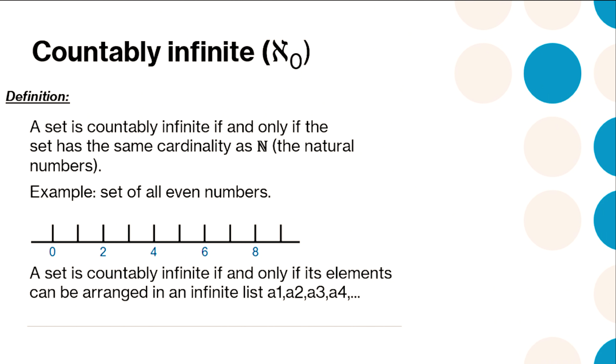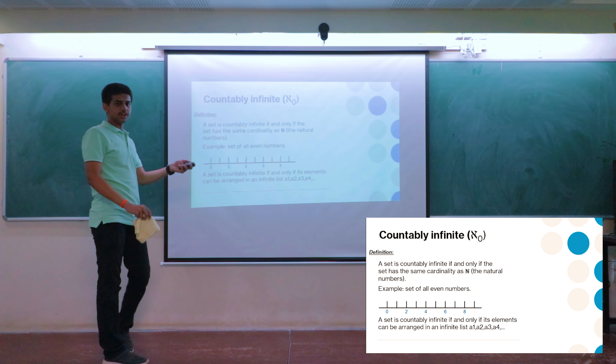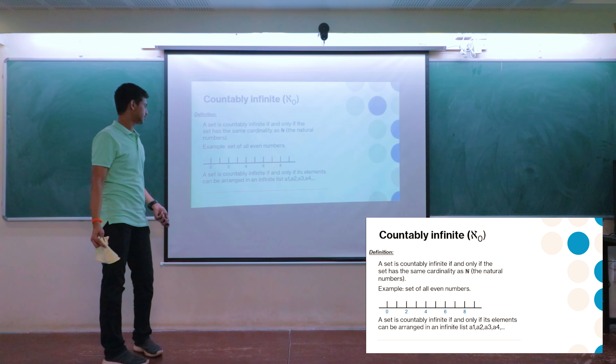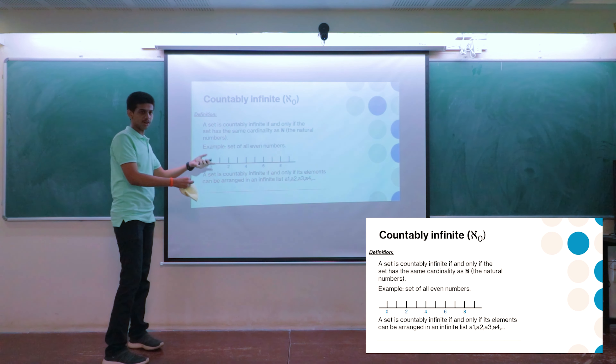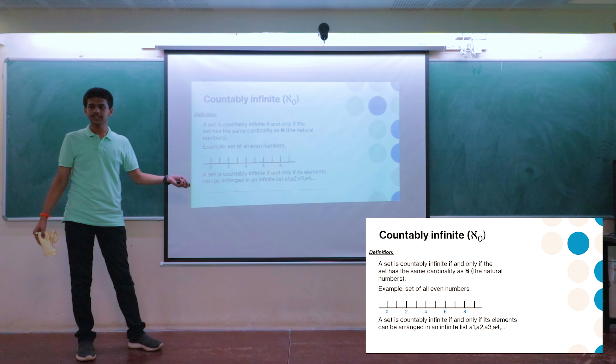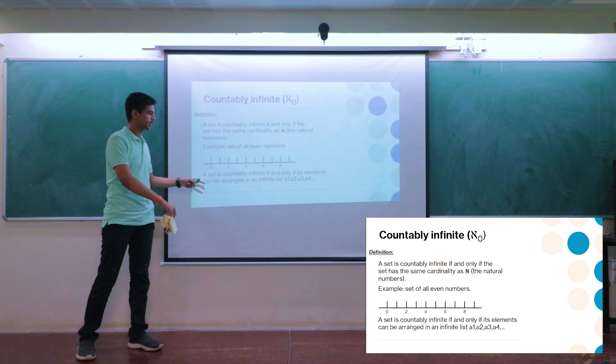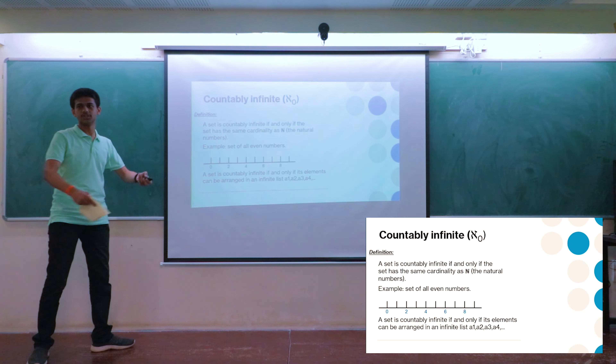In mathematics, it's common to name something when it appears frequently. When a set has the same cardinality as the natural numbers — like integers and whole numbers — we call them countably infinite sets. An example is the set of all even numbers. One condition for a countably infinite set to satisfy is that it can be listed as a sequence: a1, a2, a3, and so on.